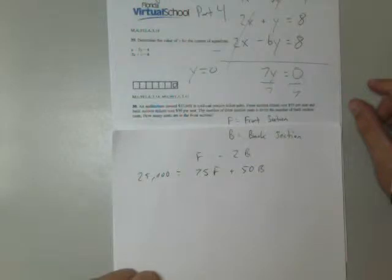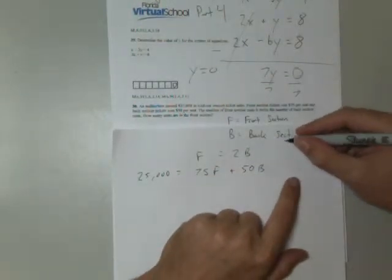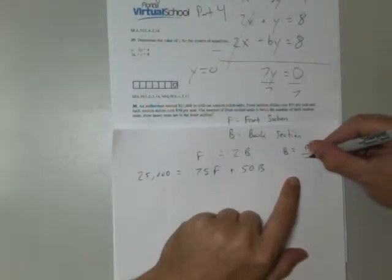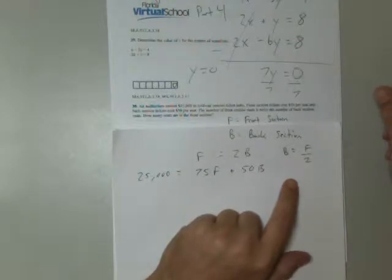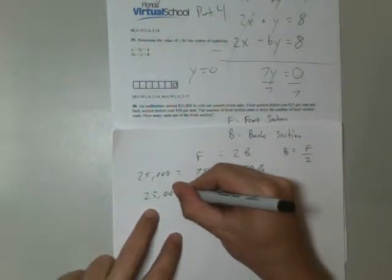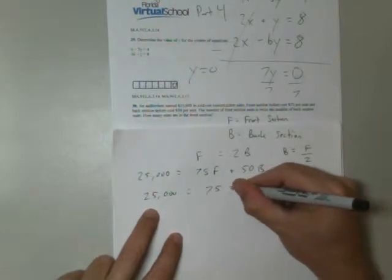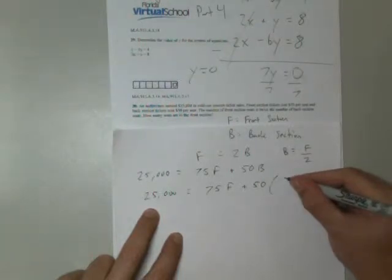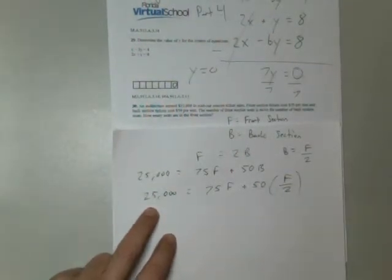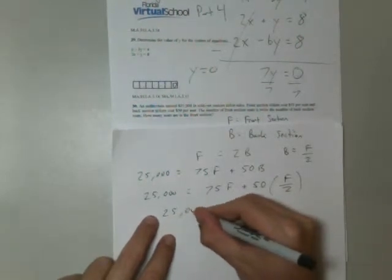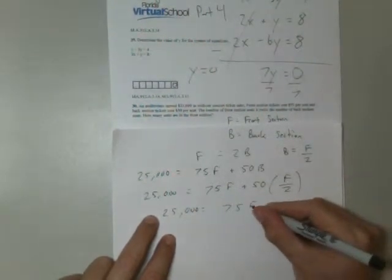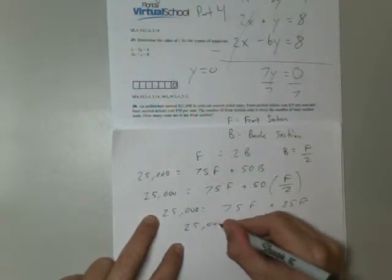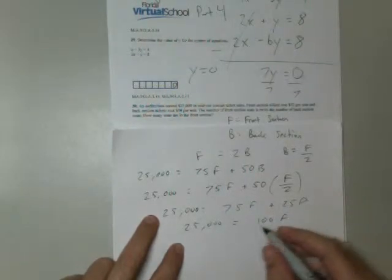So what I'm going to do is rewrite this as B equals F over 2. That way I can substitute F over 2 for B. So $25,000 equals $75F plus $50 times F over 2, which gives $25,000 equals $75F plus $25F, so $25,000 equals $100F.